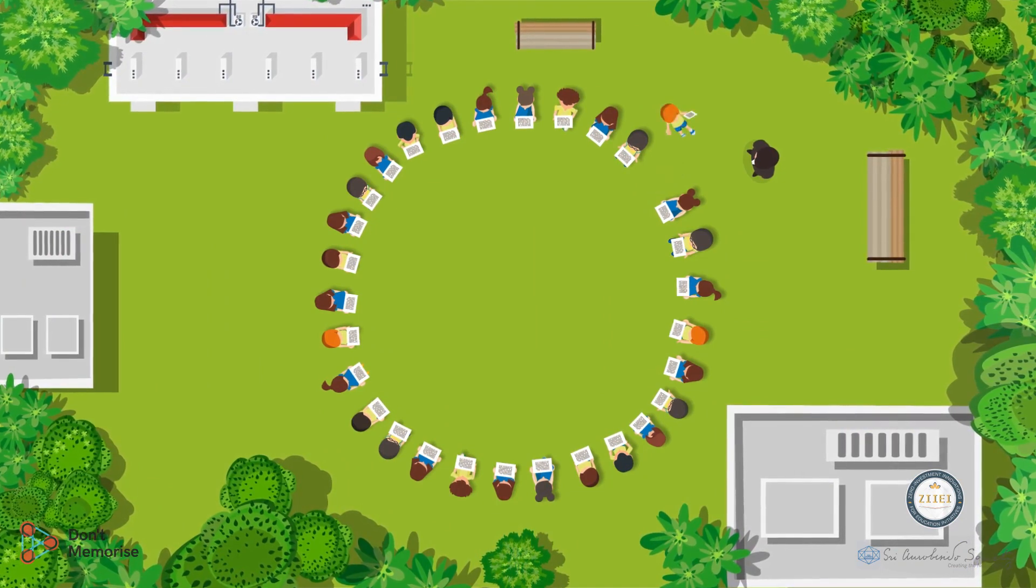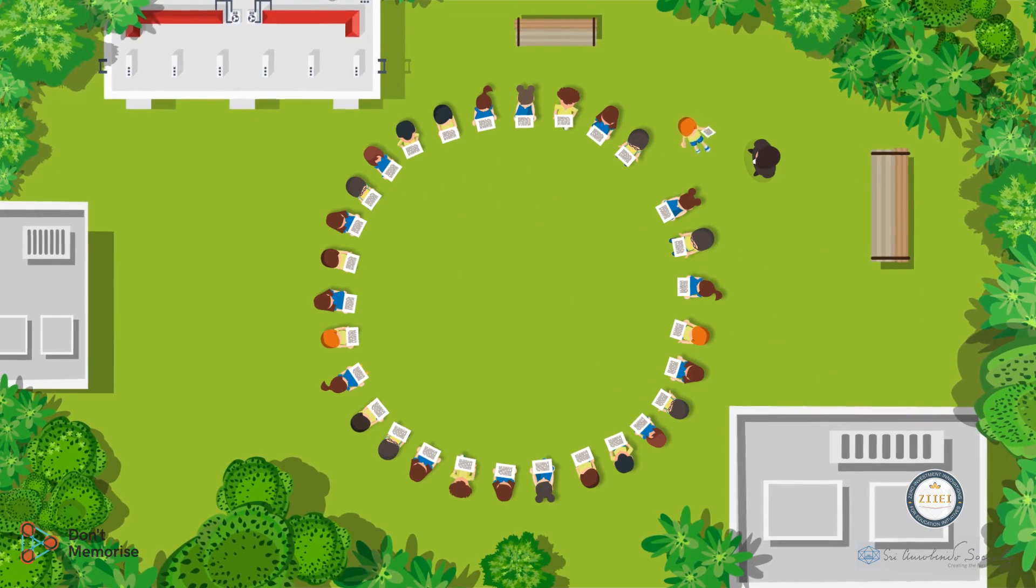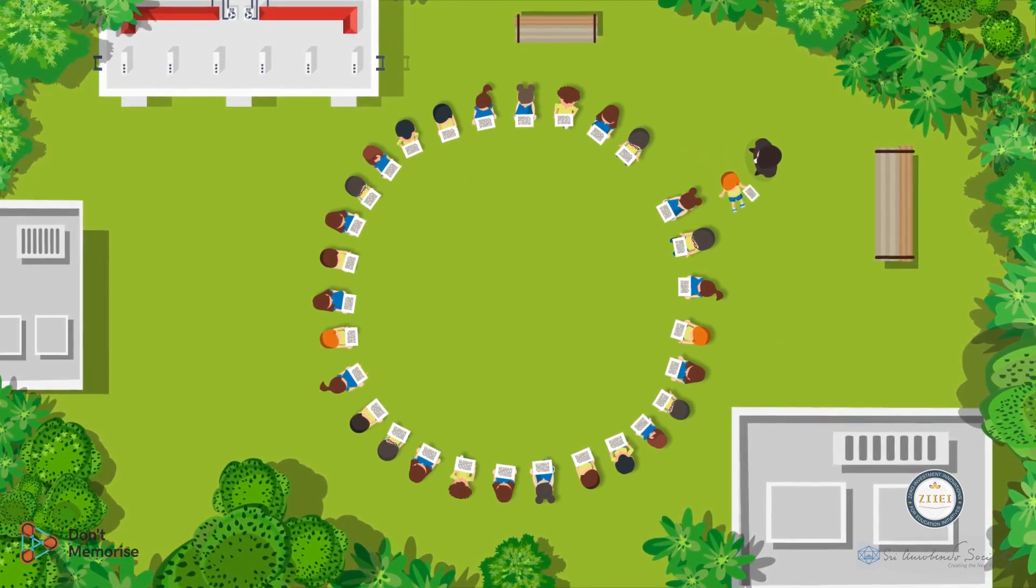This student will then get up from the circle with a letter in his hand. This student will then start running outside the circle in a circular shape right behind their classmates.